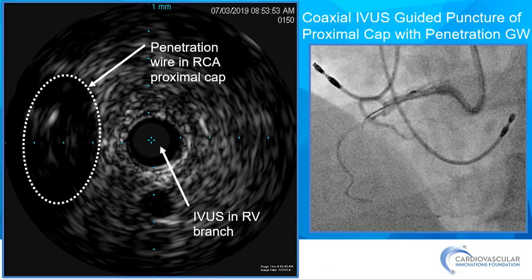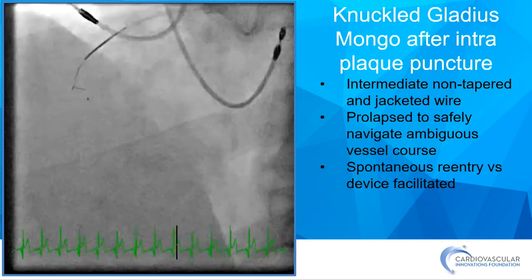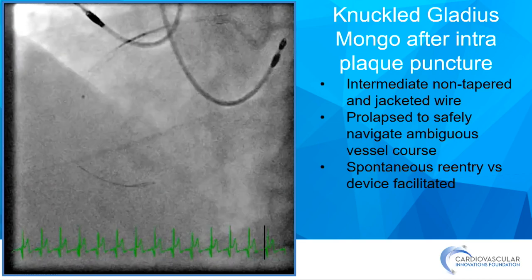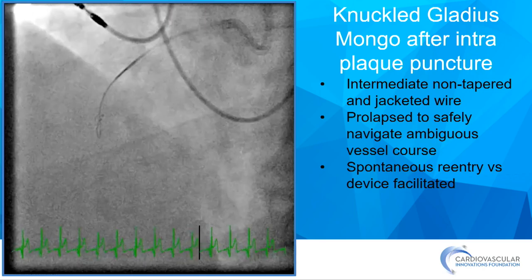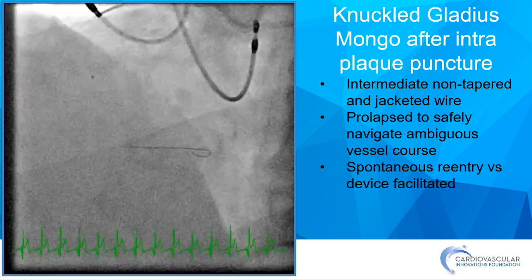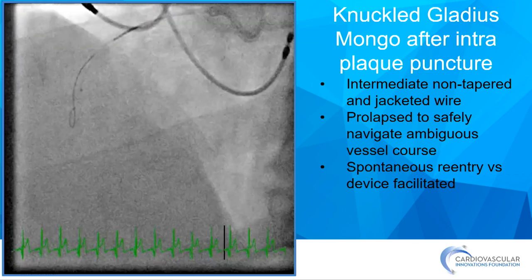For more complex cases with ambiguous proximal cap — such as a complex RCA proximal cap — the only way is with IVUS guidance. IVUS can tremendously improve the likelihood of puncturing intraplaque, and puncturing with a penetration wire intraplaque is key to getting an antegrade case done, whether it be intraplaque or extraplaque crossing. Once you're in, take a jacketed wire down the artery for re-entry by STAR, spontaneous re-entry, or Stingray re-entry. In this case, we took a jacketed Mongo wire designed to prolapse, setting up for ADR, but it spontaneously re-entered.